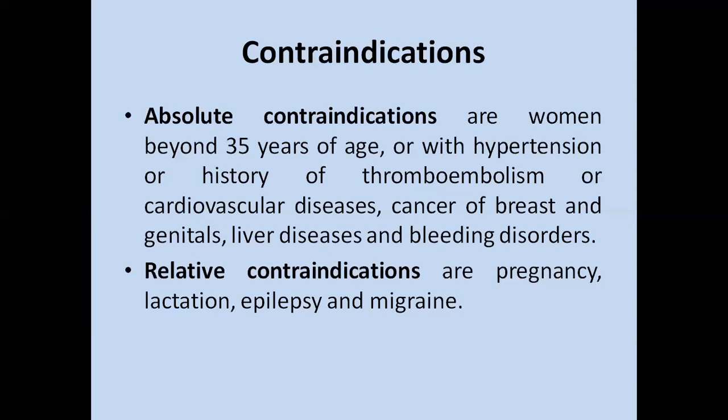Based on the demerits, we can identify contraindications — conditions in which oral contraceptive pills cannot be prescribed. These are of two types: absolute and relative. Absolute contraindications include age beyond 35 years, hypertension, thromboembolism, cardiovascular disease, cancer of the breast or genitals, liver disease, and bleeding disorders. Relative contraindications include pregnancy, lactation, epilepsy, and migraine.